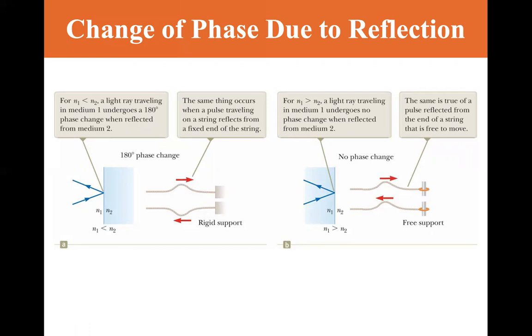For N1 greater than N2, a light wave traveling in medium one undergoes no phase change when reflected from medium two. The same is true for a pulse reflected from the end of a string that is free to move. If it's free to move, the ring will slide up and you get no phase change.